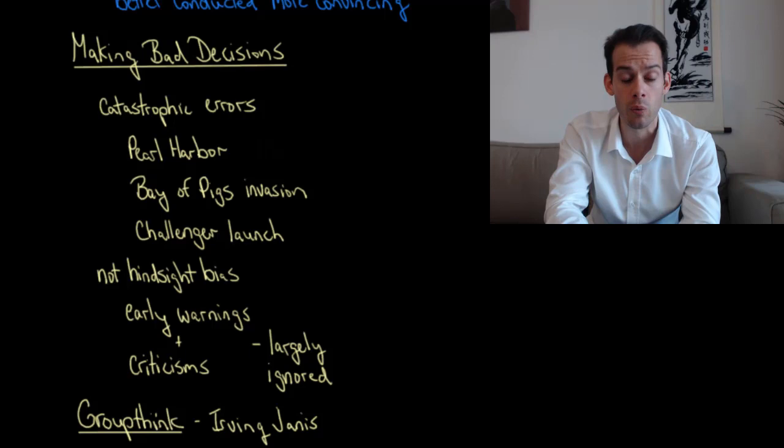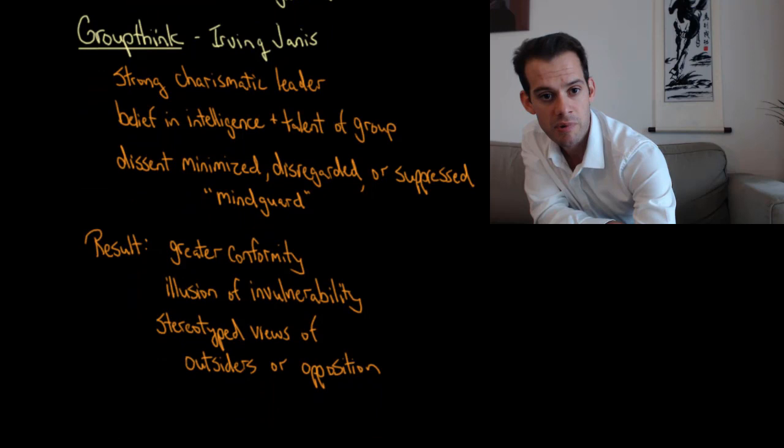It's not really the case that these are examples of simple hindsight bias because these are situations where there were early warnings and there were criticisms of the approaches that were implemented and yet these early warnings and criticisms were largely ignored. So why would the groups ignore these possible criticisms or these possible warnings?